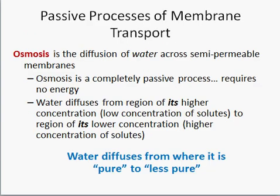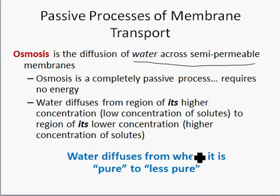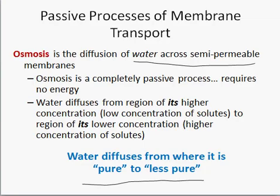Osmosis is also a type of passive transport, and this has to do with the diffusion of water across a permeable membrane — such as the plasma membrane. Essentially, water goes from areas where it's in high concentration, or more pure, to regions where it's in lower concentration. One way to think of it: water diffuses from where it's pure to less pure.